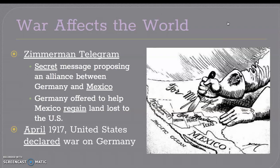What actually caused the United States to join the war was this telegram. The Zimmermann Telegram was a secret message proposing an alliance between Germany and Mexico. Germany offered to help Mexico regain the land lost to the United States. And as you can see, Mexico is right south of the border. So this was what caused the United States to declare war on Germany in April of 1917.